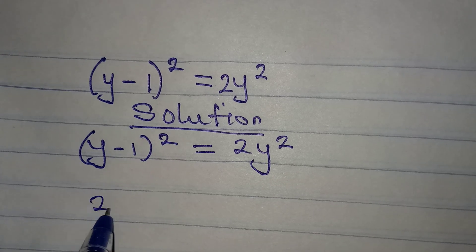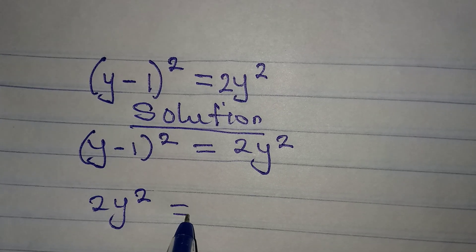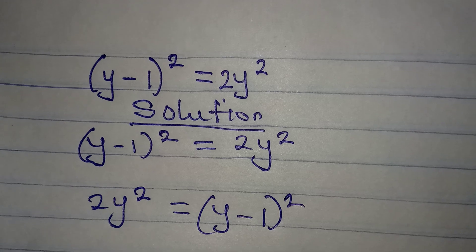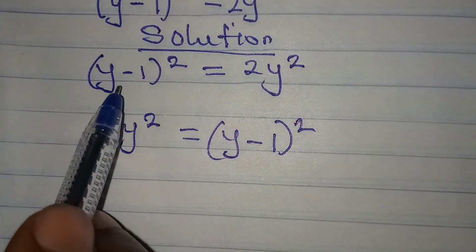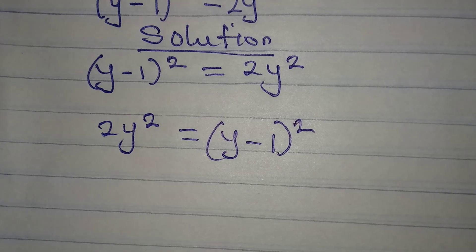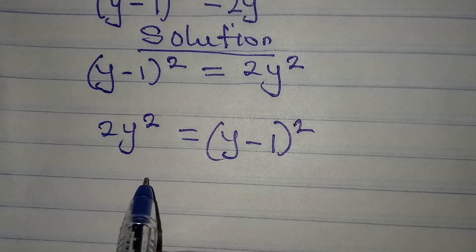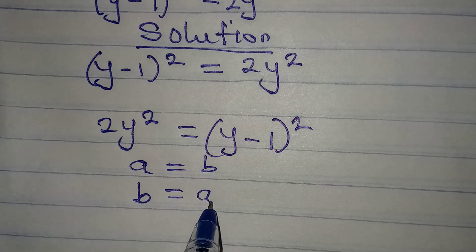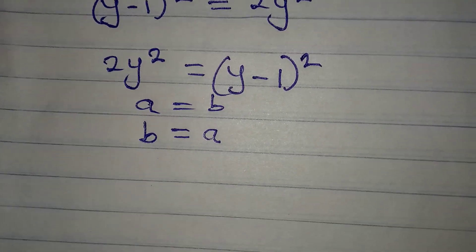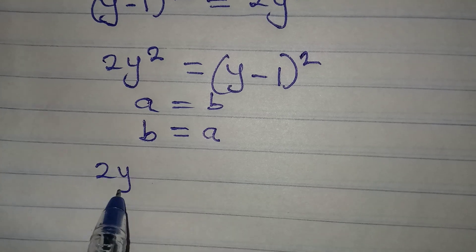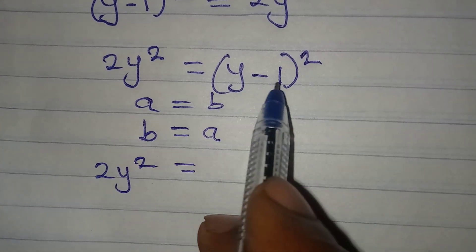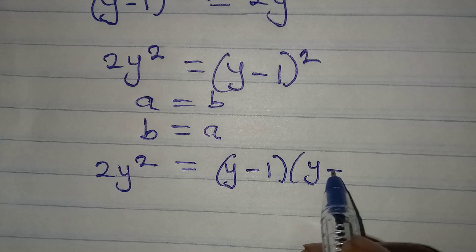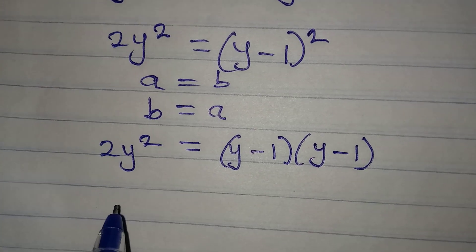I would like to bring this to the left and take this to the right. So if I do that I'll have 2y² which will be equal to (y - 1)². Someone might be thinking: now that I've changed their position, why are they not changing their sign? You don't have to — because if a = b then b = a. That's what I did.